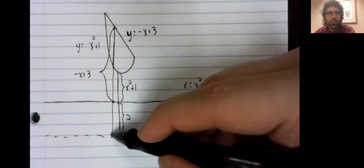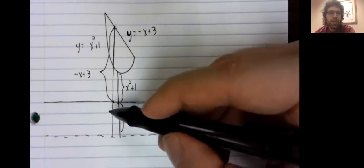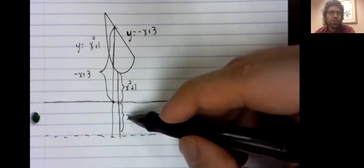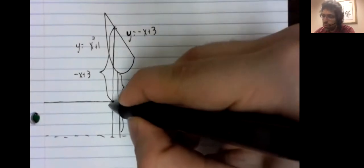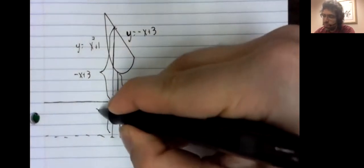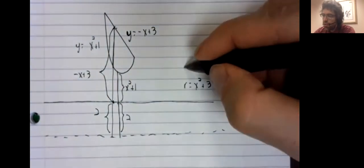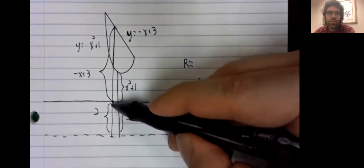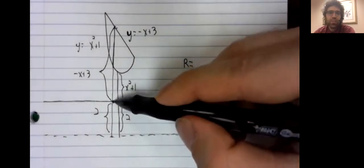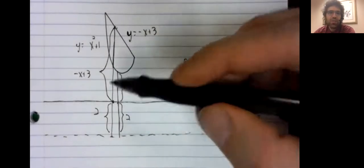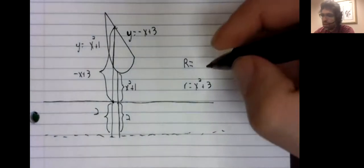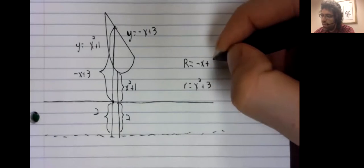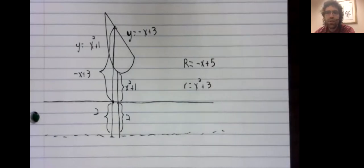The distance from y equals negative two to y equals zero is again two. So the total distance is this distance plus this distance, negative x plus five.